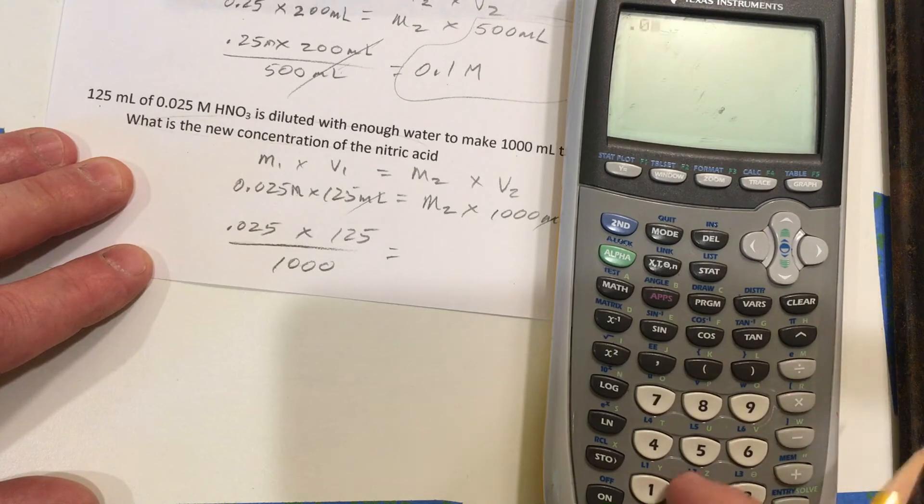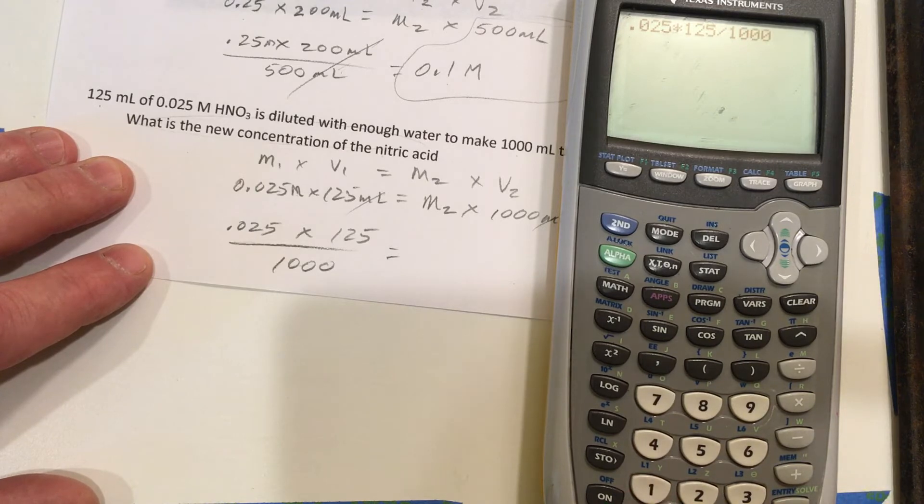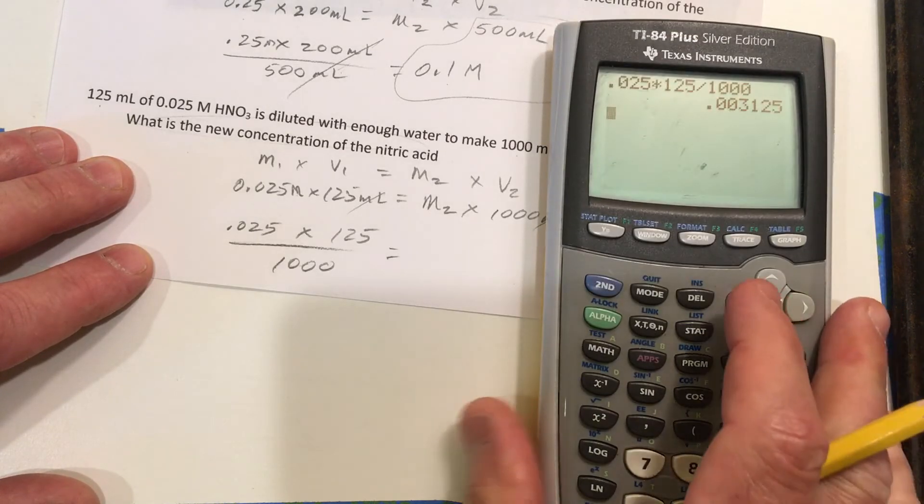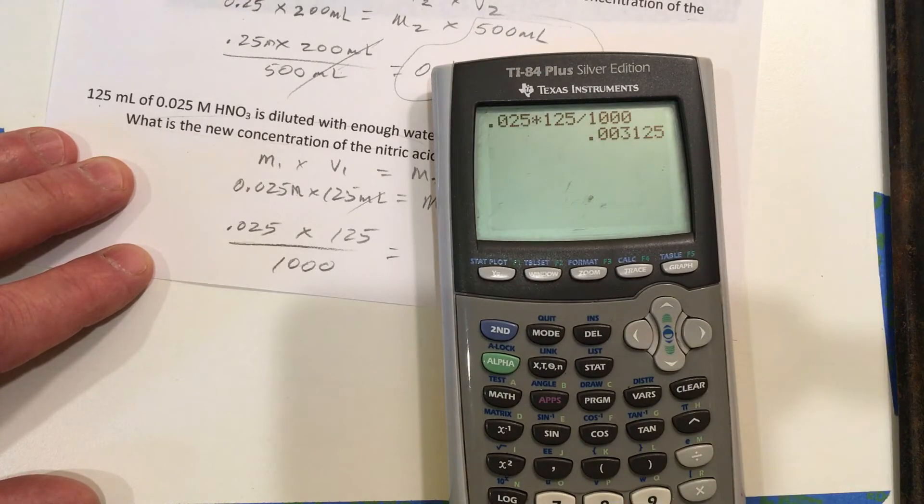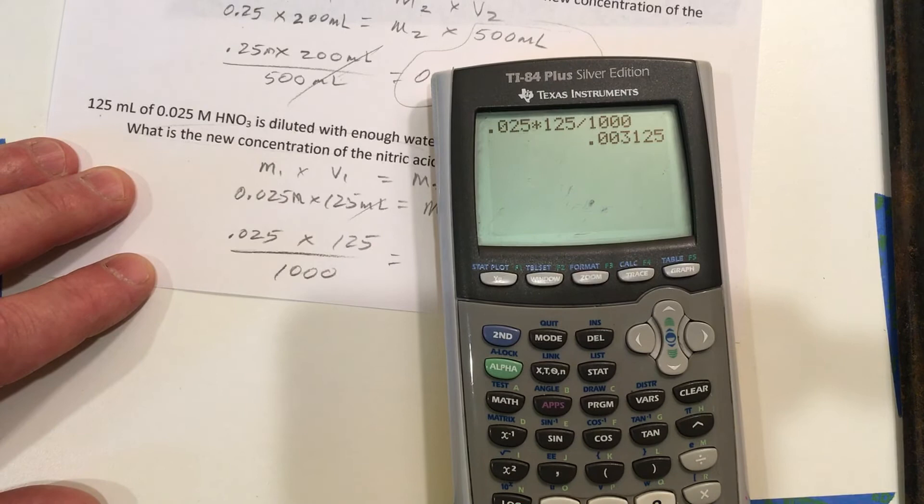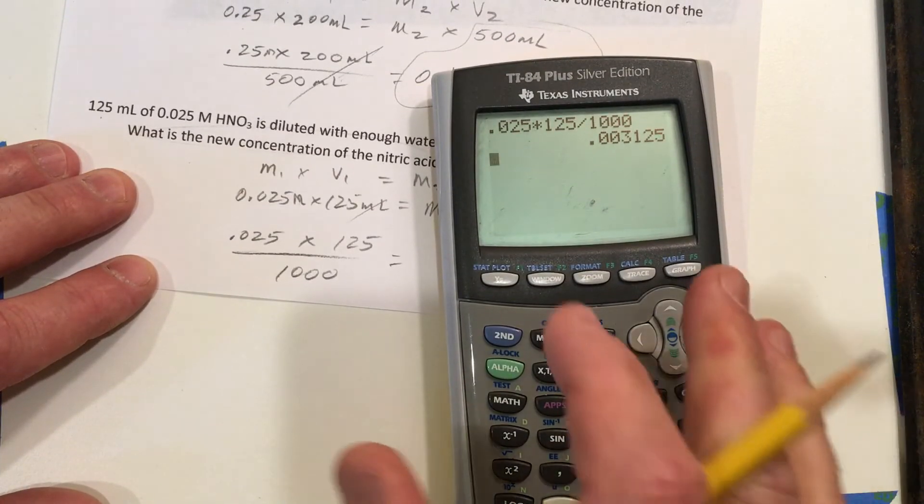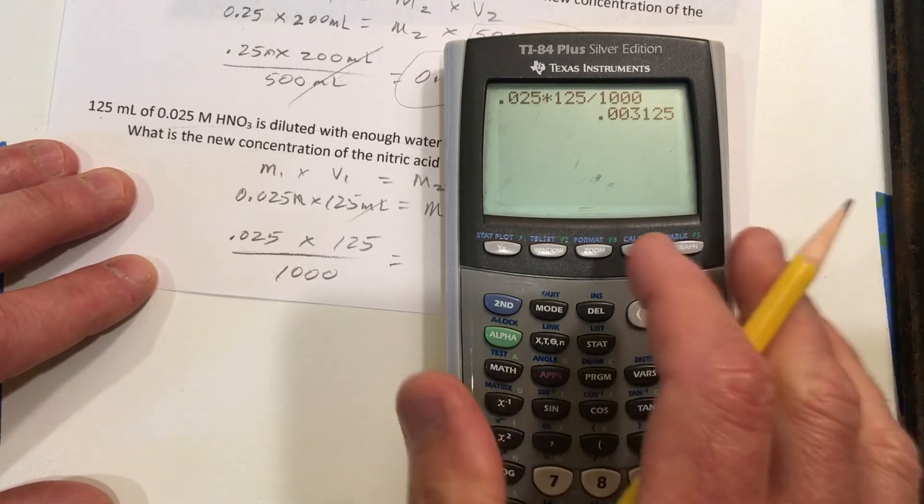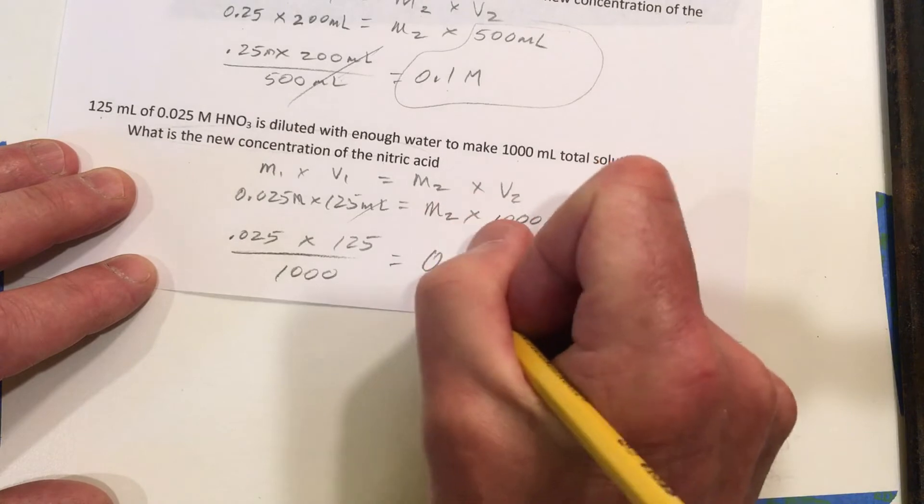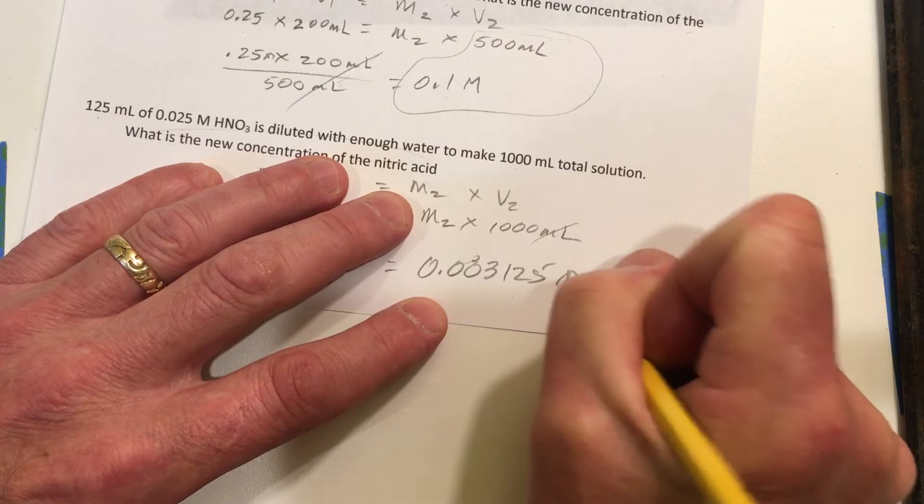And 0.025 times 125 divided by 1,000 equals 0.003125. So that's 0.003125 molarity.